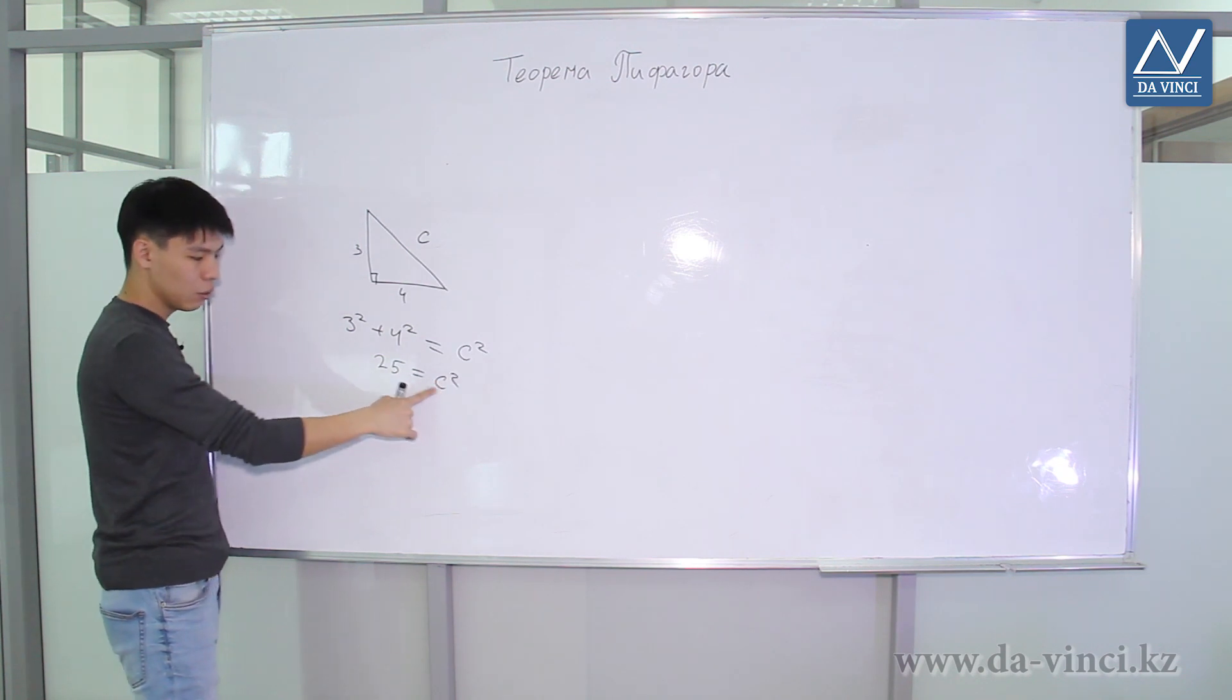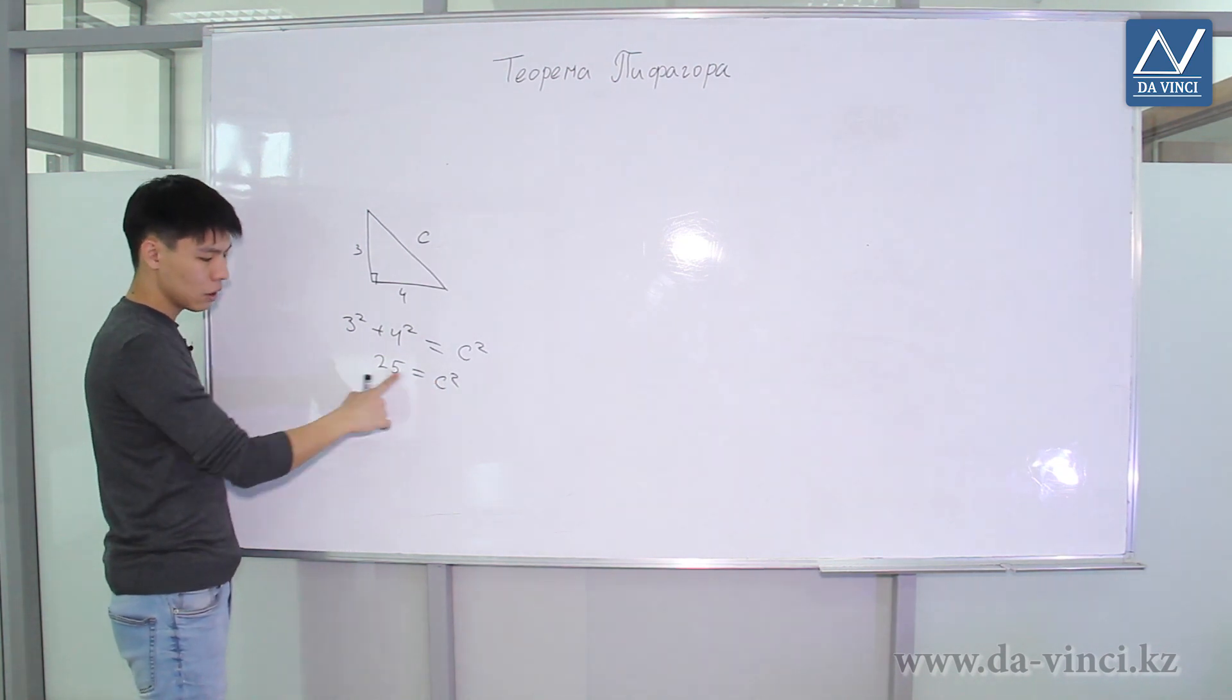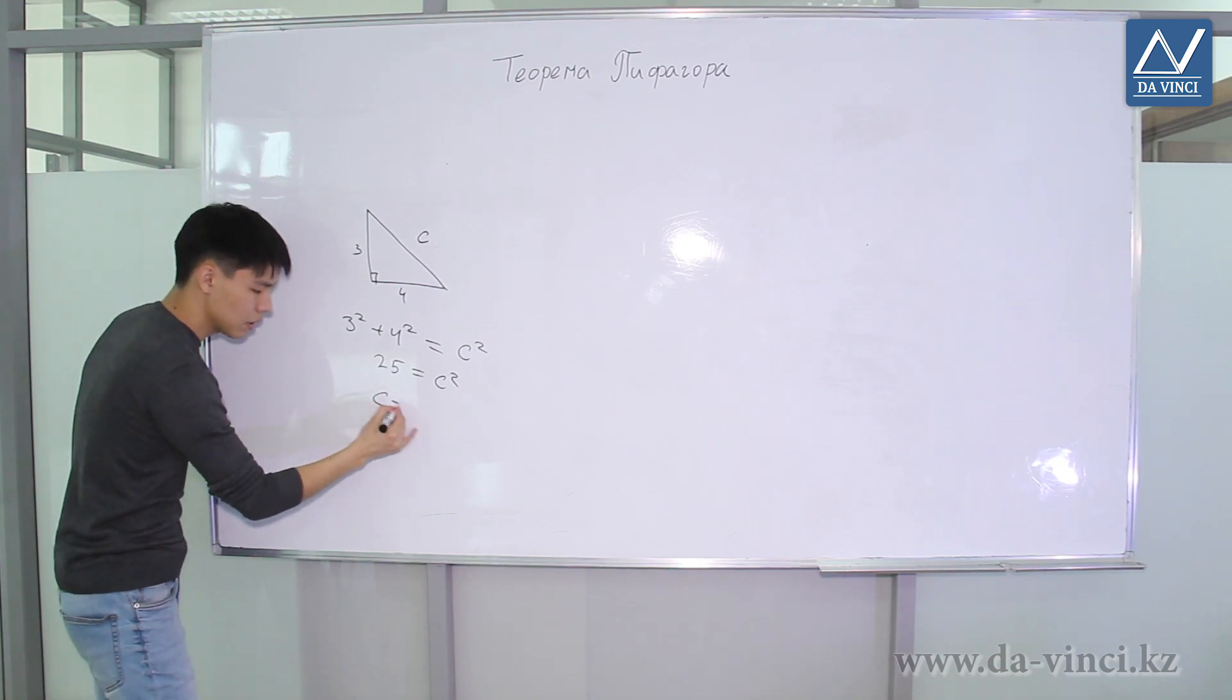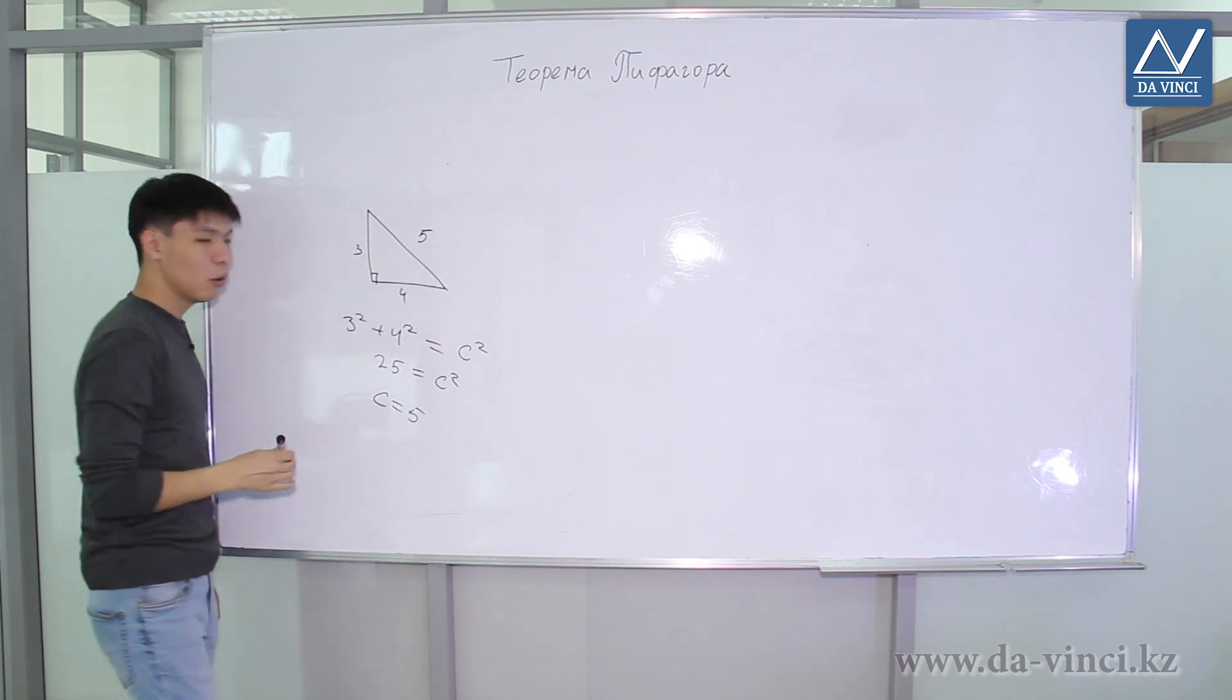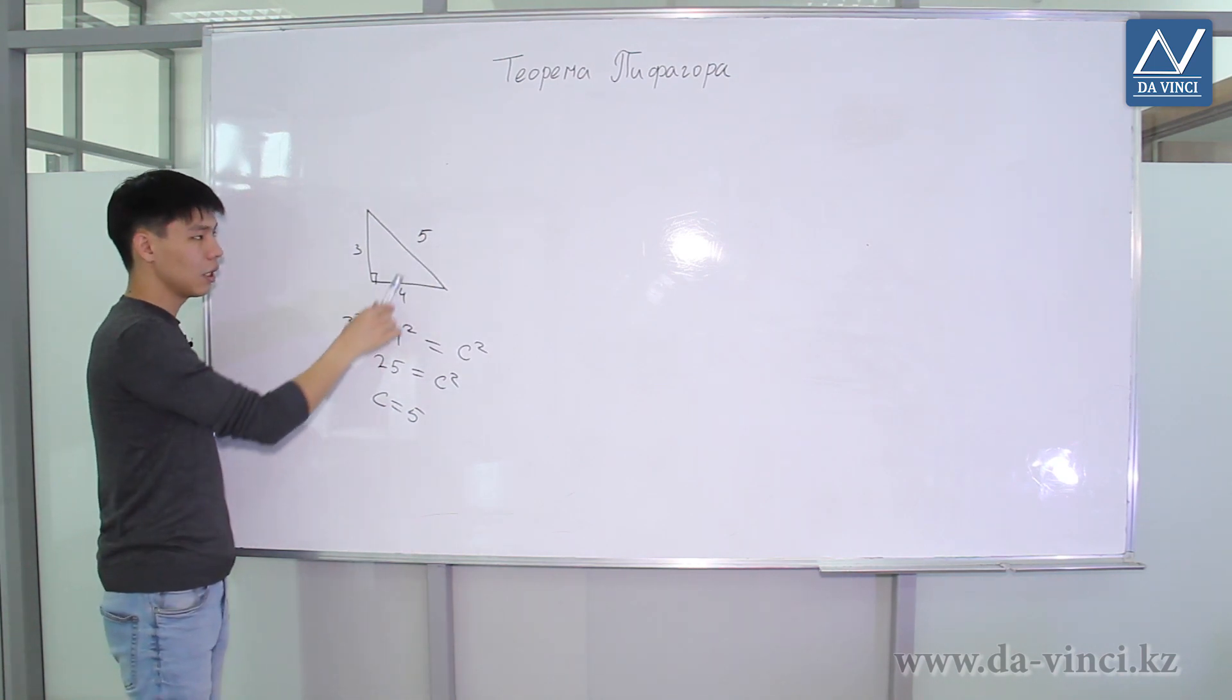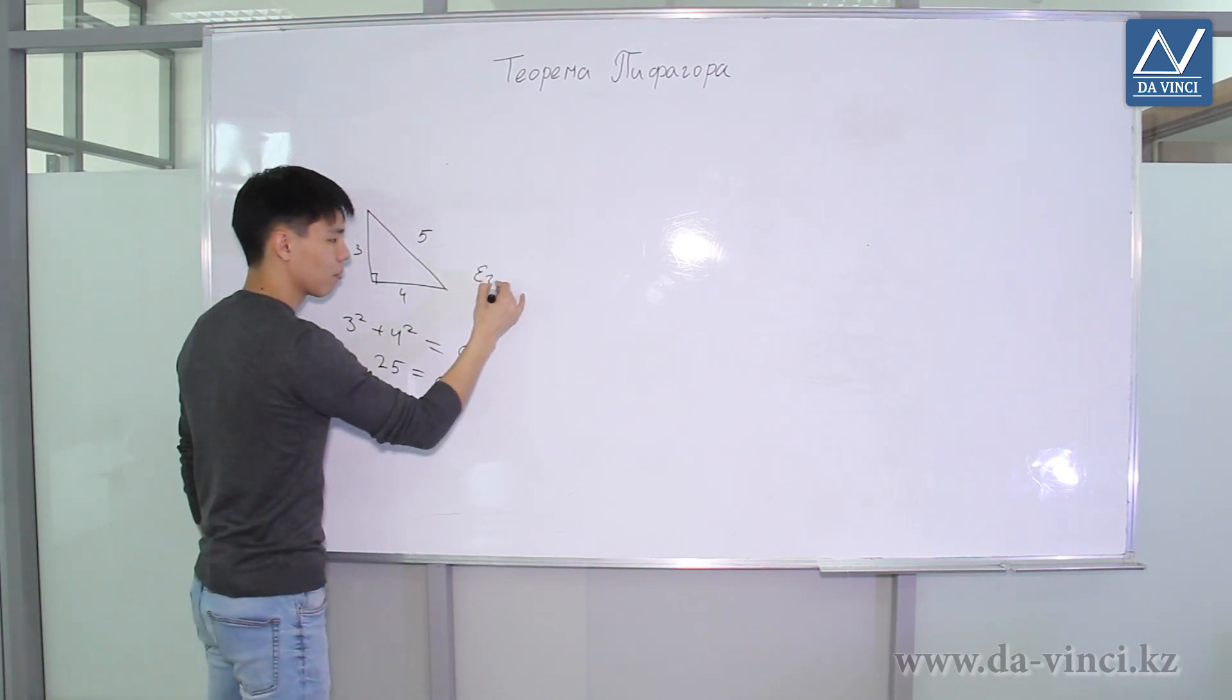That is, the square of the hypotenuse is 25. What number squared gives us 25? It's 5, as we used to know. So the hypotenuse is 5. A right triangle with sides 3, 4 and 5 is called the Egyptian triangle.